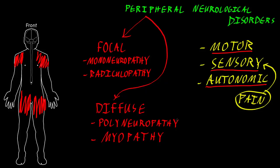Many types of pathology commonly cause polyneuropathy or myopathy, including certain genetic disorders, idiopathic disorders, autoimmune disorders, metabolic disorders, and nutritional and toxic disorders. So there are many different disorders that can cause these syndromes in the bigger category of peripheral neurological disorders.